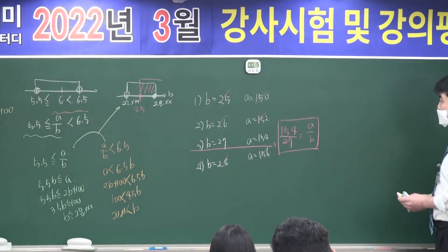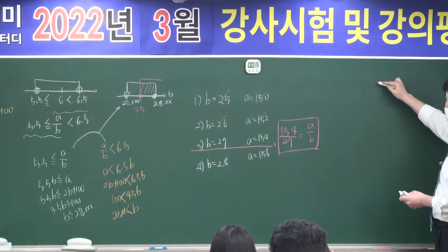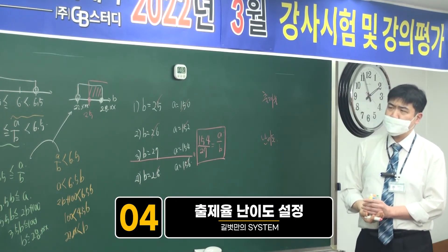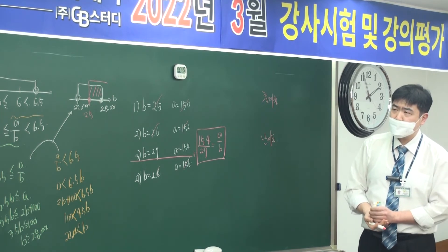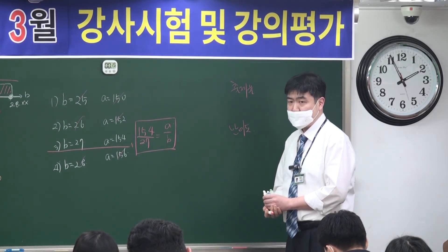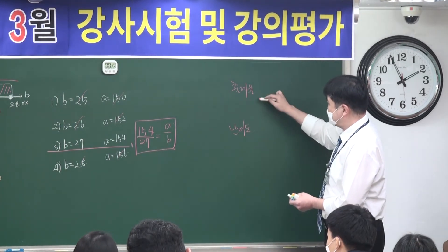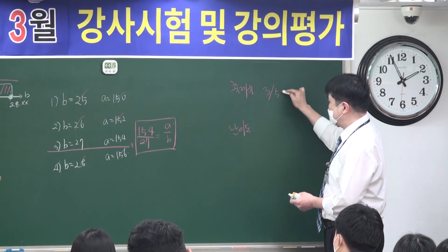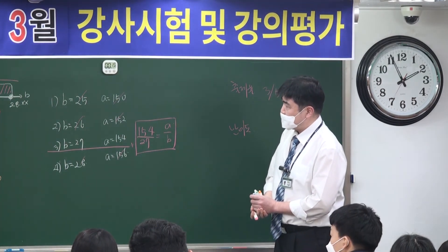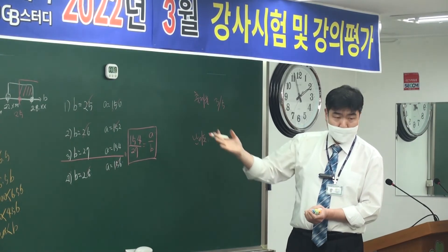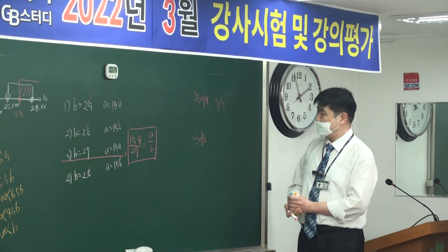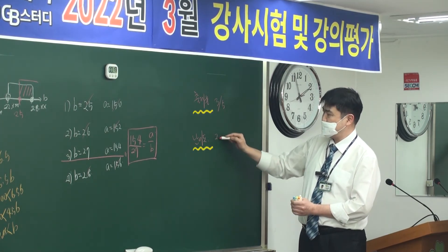이 문제의 출제율과 난이도를 살펴보면, 출제율은 기약분수 그리고 반올림 — 이런 것들은 자주 나오는 편이라서 3점 정도 주겠습니다. 난이도는 반올림 표시를 할 줄 알고 약간의 방정식 연산을 할 수 있으면 접근할 수 있기 때문에 난이도도 높지 않게 절반 정도 수를 주도록 하겠습니다.